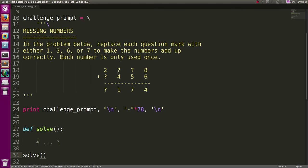Hey, what's going on everybody? My name is John Hammond, and welcome back to another YouTube video. Here I am again, presenting you with a new challenge and a challenge prompt. This one is called Missing Numbers, and the problem below, replace each question mark with either 1, 3, 6, or 7 to make the numbers add up correctly, and each number is only used once.